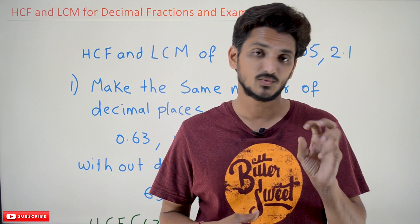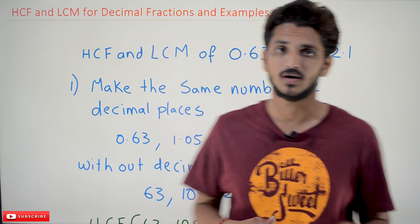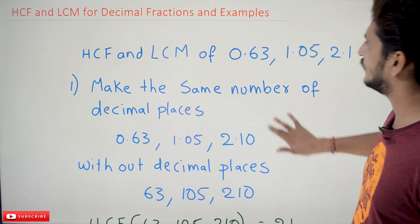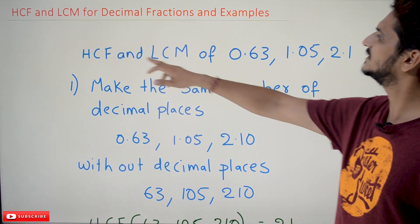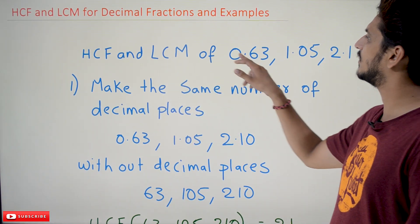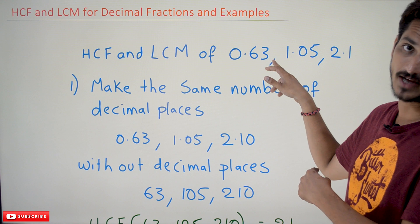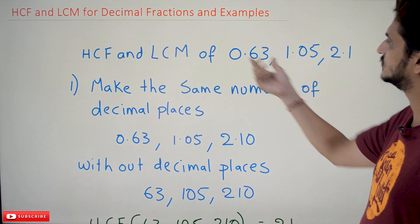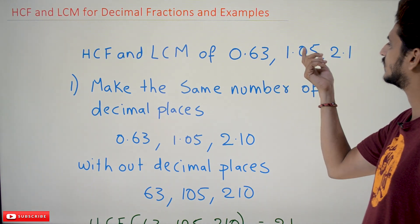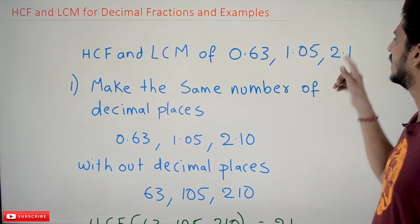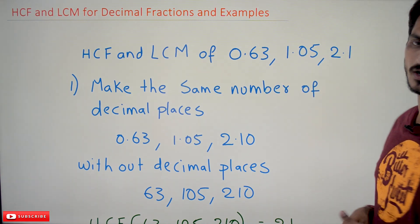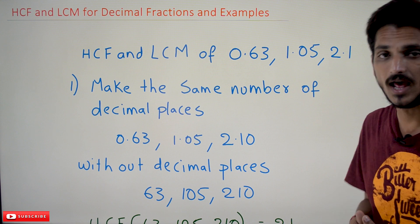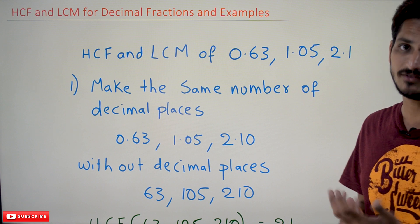the last example is very very important to understand. First, HCF and LCM of decimal fractions. If the numbers are given like this: 0.63, 1.05, 2.1 — how do we identify the LCM and HCF values?